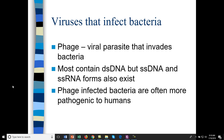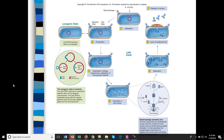Looking at how a phage can infect a host, you can have either a lytic state where the bacteria get infected and then lyse, or a lysogenic state where the bacteria get infected and the viral DNA becomes a prophage. Starting with an E. coli host, the phage injects its DNA — the actual capsid doesn't penetrate the cell, it just docks with the base plate of the virus and injects the viral DNA.